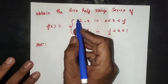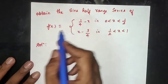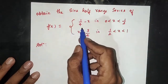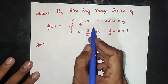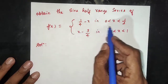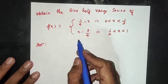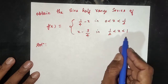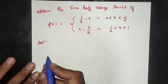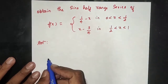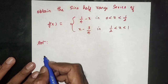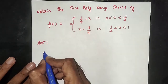Next question: obtain the sine series of n for f(x), where f(x) equals 1/4 minus x when x is between 0 to 1/2, and x minus 3/4 when x is between 1/2 to 1. This is the given model. Find the sine series bn.